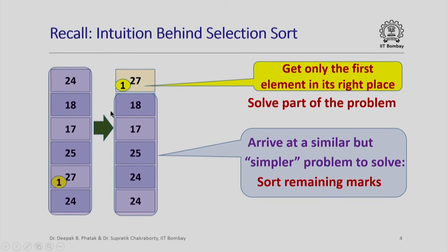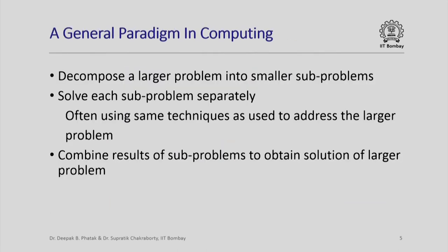The overall principle here is to take a larger problem and break it up into slightly smaller problems. We found the maximum element in the unsorted array and then got a slightly smaller subproblem. This general principle is a general paradigm in computing: when given a large problem to solve, we can decompose it into several smaller subproblems. If each subproblem is an instance of the same larger problem but with reduced input size, we can solve each separately using the same techniques, and then combine the results of the subproblems to obtain the solution to the overall problem.